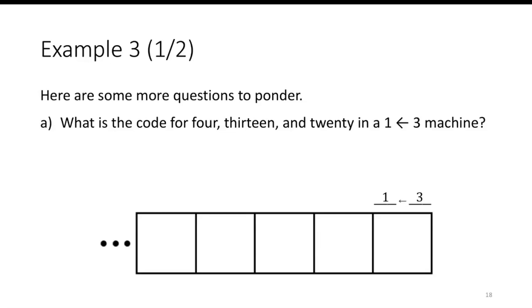Here are some other questions to ponder. What is the code for four, thirteen, and twenty? Well, if I have four dots, I can make one group of three, kablooey, and leave with one. So for four, that's just going to be 11.